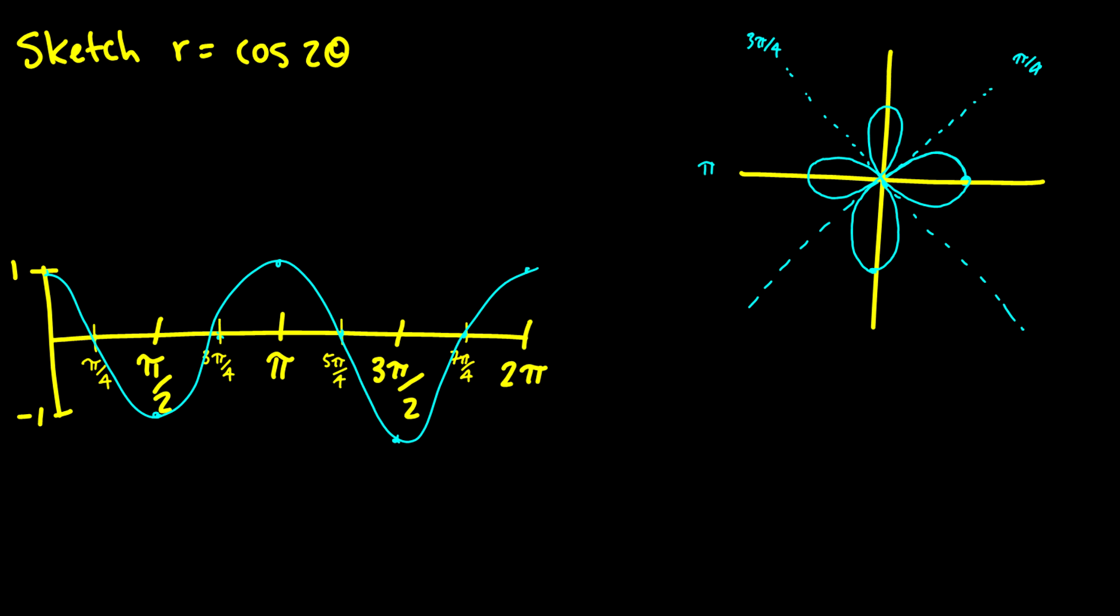Now this is not something that is very easily produced in cartesian coordinates. Can you think of a function y is equal to f of x that can do something like that? Not really. What about a function y is equal to g of t and x is equal to f of t that we did in parametric curves? Again not the easiest thing to imagine. We have this used for polar coordinates to do beautiful things like this.